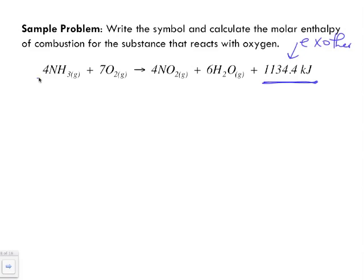If we look at it, we have 4 moles of ammonia reacting with 7 moles of oxygen to form 4 moles of nitrogen dioxide gas and 6 moles of water vapor. None of them are represented as one mole. Now the thing is, this question says combustion, so what is combusting in this equation?